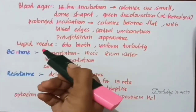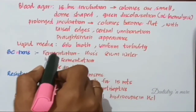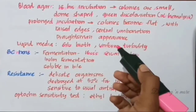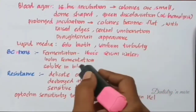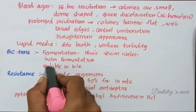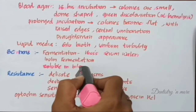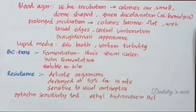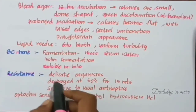Pneumococci ferment several sugars with production of acid only; fermentation is tested in Hiss serum water. The fermentation of inulin by pneumococci is of great value to differentiate them from streptococci. Streptococcus pneumoniae is soluble in bile — when 2% sodium deoxycholate solution is added to a broth culture, the culture clears due to lysis of the cocci.